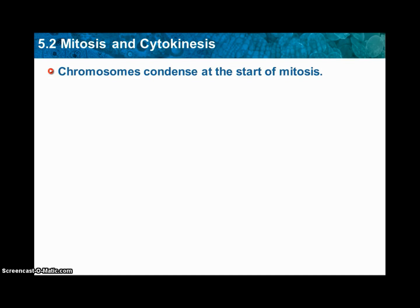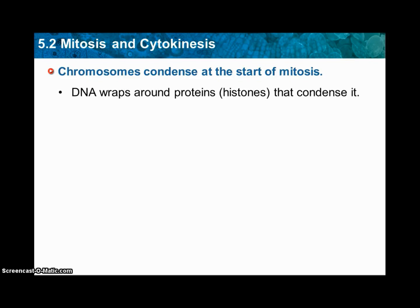Chromosomes condense at the start of mitosis. Condense means they're going to get smaller — that's what they're going to start off to do. DNA wraps around proteins called histones that condense it.